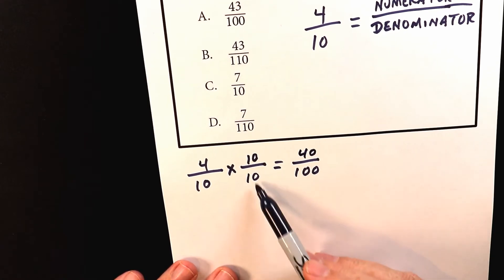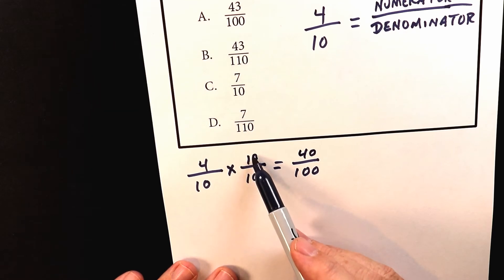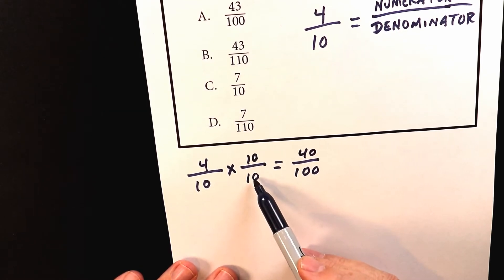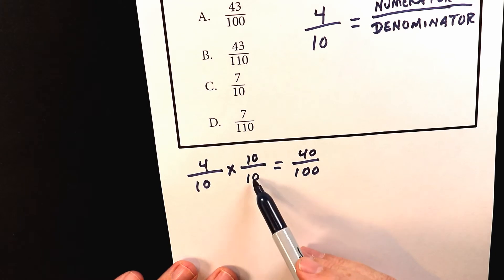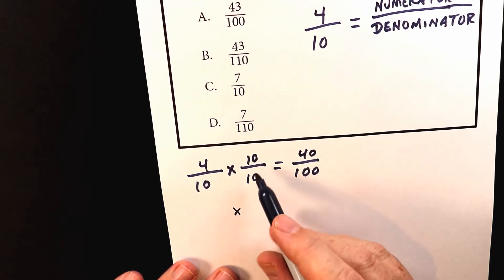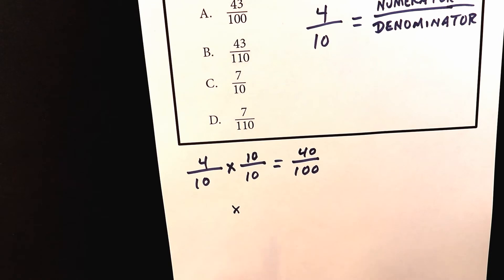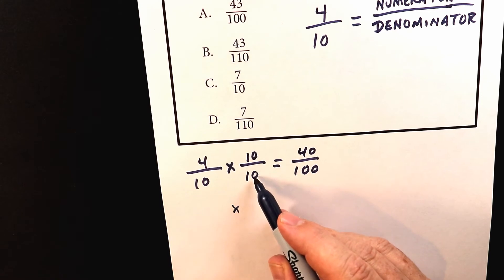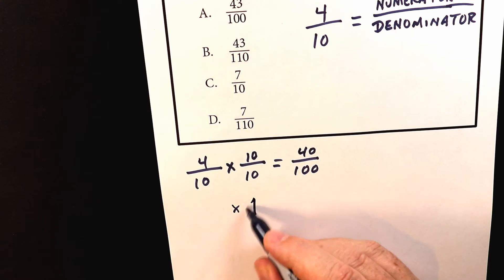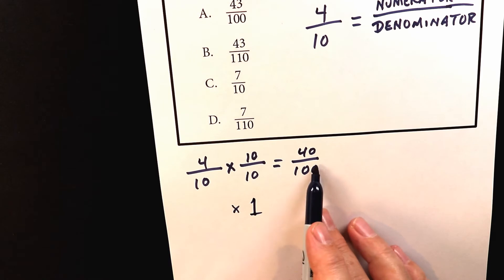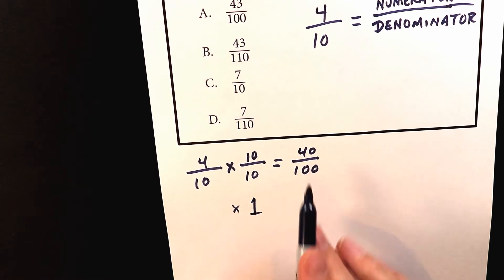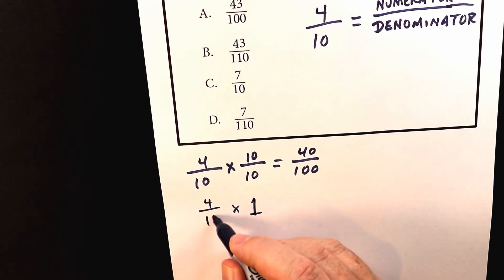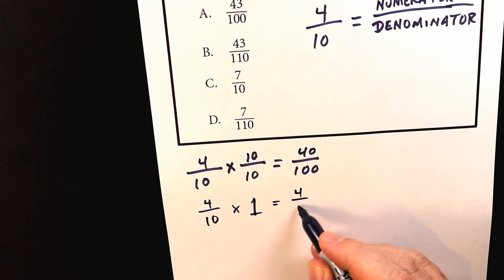Now you might want to ask how does this work? If you put the same number on the top and the bottom it equals 1. So 10 over 10 equals 1. So watch this. If that equals 1, and if you don't believe me well I don't know what to tell you, you just have to trust me on that. But if the bottom number and the top number of a fraction are the same then it equals 1. And if you multiply any number by 1 it doesn't change the value. It might look different in this case but it doesn't change the value. So 4 over 10 times 1 equals 4 over 10.